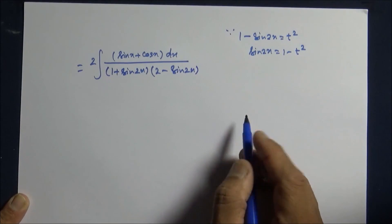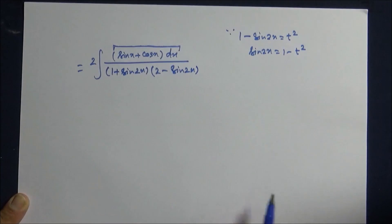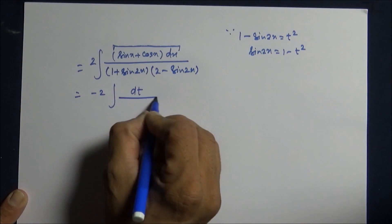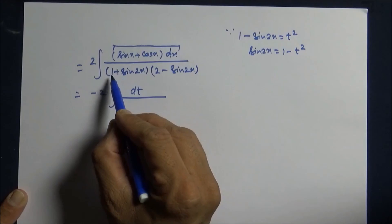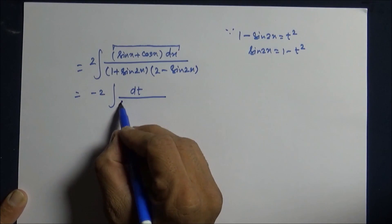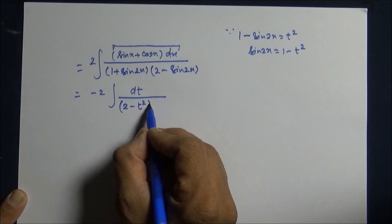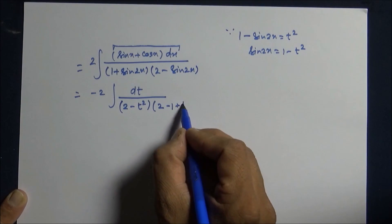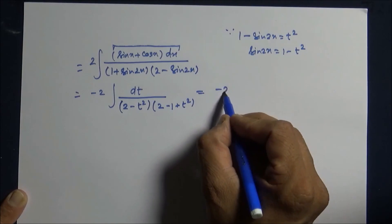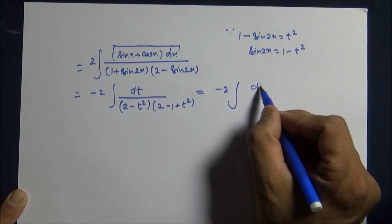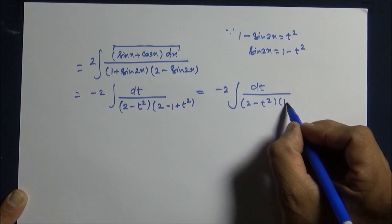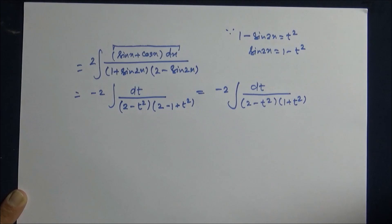Since 1 minus sin 2x equals t square, sin 2x equals 1 minus t square. Remembering the question, this is 2 times sin x plus cos x dx. The entire numerator turns to minus dt, and the denominator: 1 plus sin 2x becomes 1 plus 1 minus t square, which is 2 minus t square. So the integral becomes minus 2 dt over 2 minus t square times 1 plus t square.